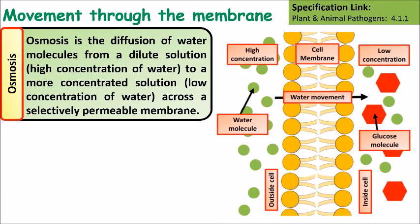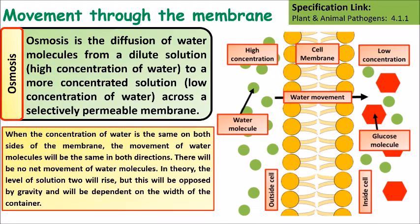Osmosis is the diffusion of water molecules from a dilute solution to a more concentrated solution across a semi-permeable membrane. Alternatively, osmosis is the movement of water from an area of high water concentration to an area of low water concentration across a semi-permeable membrane. When the concentration of water is the same on both sides of the membrane, the movement of water molecules will be equal in both directions — there will be no net movement of water molecules, and you'll end up with an equal concentration of water on both sides of the membrane.